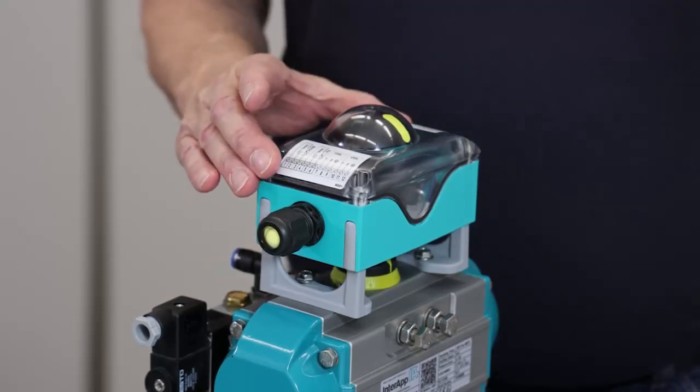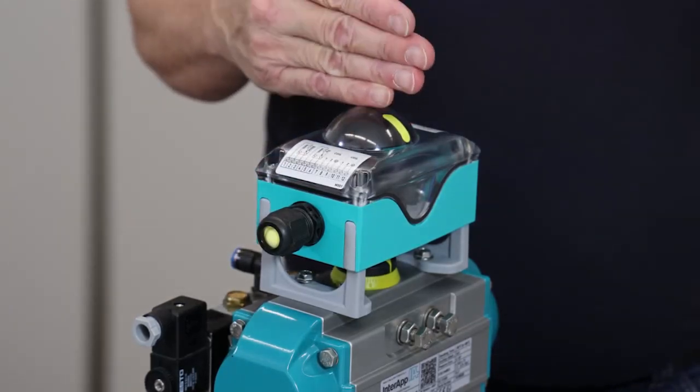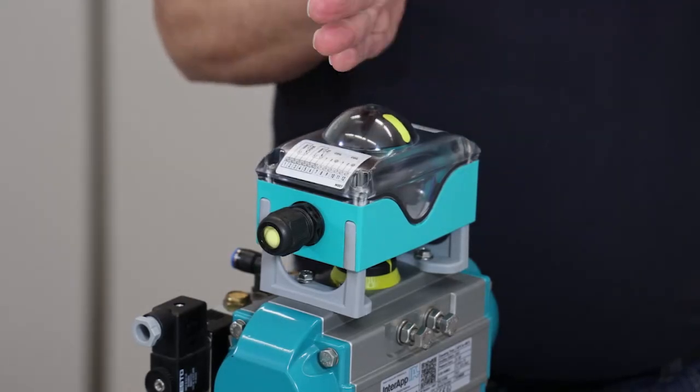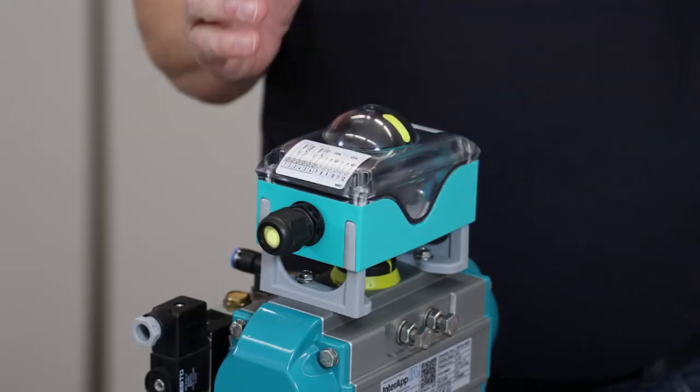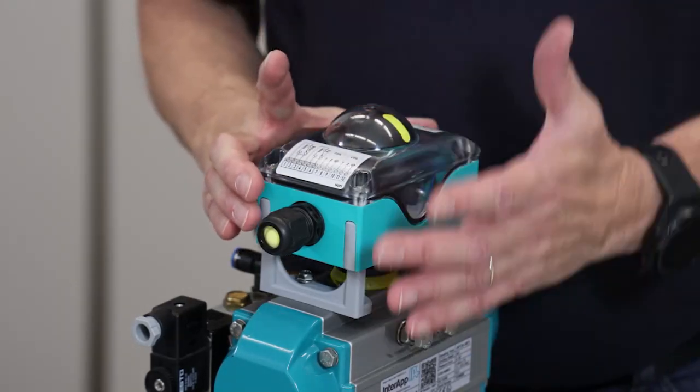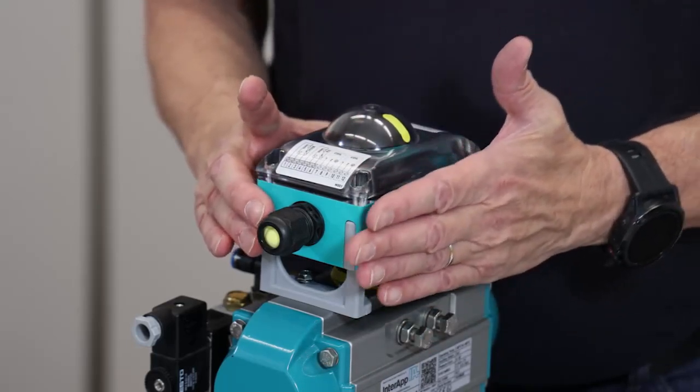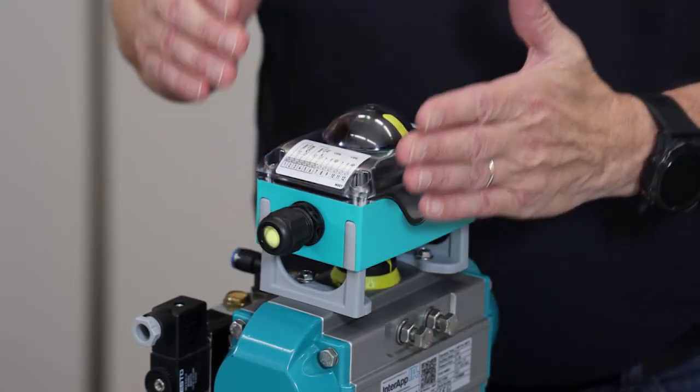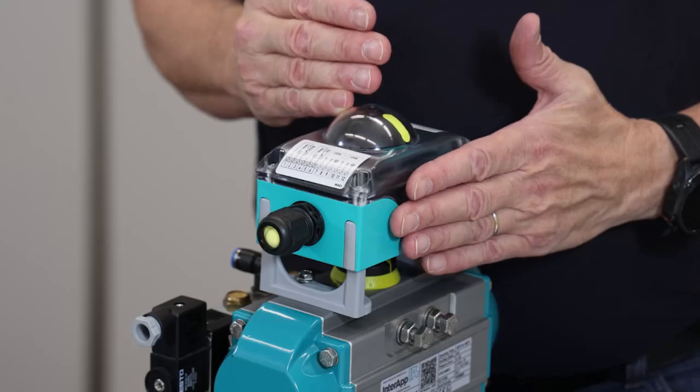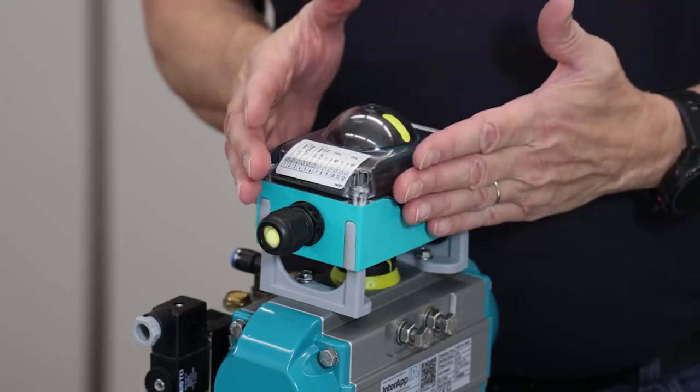By default, the limit switches are adjusted in the factory at 0 and 90 degrees. In case you find problems during the installation or you want to be sure, you can readjust them on your own.